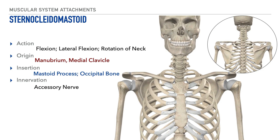Now let's take a look at the sternocleidomastoid. Its actions include flexion, lateral flexion, and rotation of the neck. Its origin is on both the manubrium and the medial portion of the clavicle. Its insertion is on both the mastoid process and the occipital bone — we'll show the insertion on the mastoid process here and the insertion point on the occipital bone here, which is best identified on the posterior aspect of the skull. The innervation of the sternocleidomastoid is the accessory nerve.